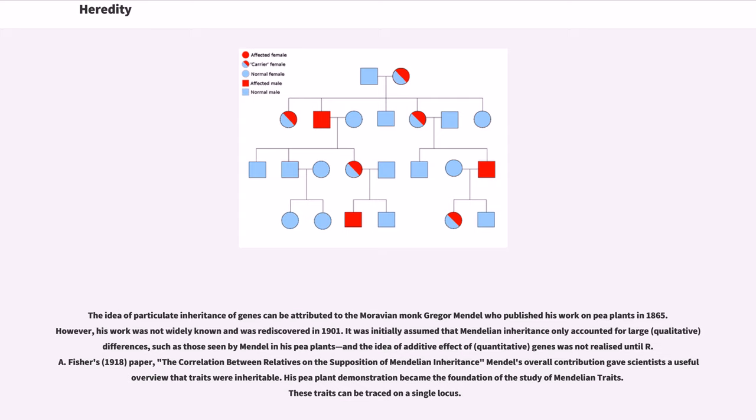The idea of particulate inheritance of genes can be attributed to the Moravian monk Gregor Mendel who published his work on pea plants in 1865. However, his work was not widely known and was rediscovered in 1901. It was initially assumed that Mendelian inheritance only accounted for large, qualitative differences, such as those seen by Mendel in his pea plants.